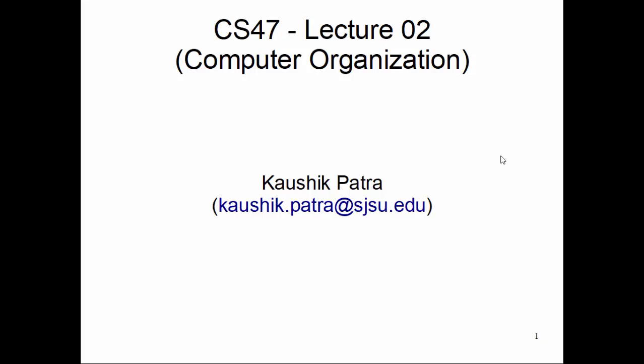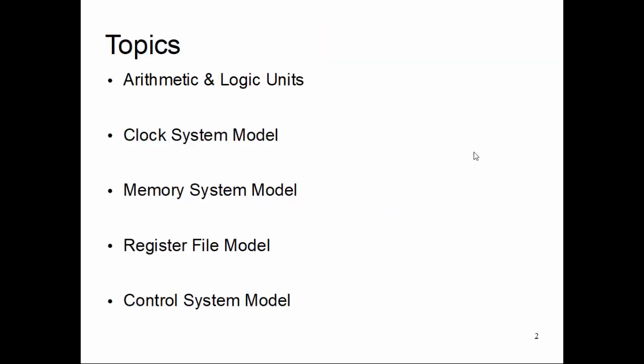This is the second lecture of computer organization. We have a couple of topics where we'll get introduced to different modules of a computing system - the most important parts of any basic computing model. Any modern computer has these components: arithmetic logic units, clock system model, memory system model, register file model, and control system model. These five subsystems are the basic fundamental components you will find in any computing system in the world.